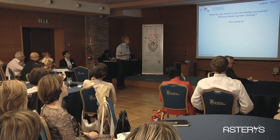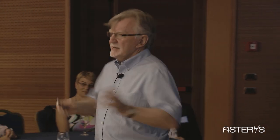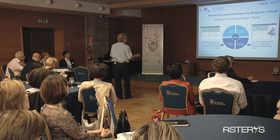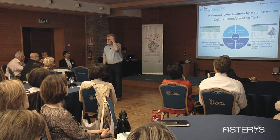How do you know if you're being successful driving whole system change? First, you need to measure the consciousness of the leaders. Then measure the consciousness of the organization as perceived by employees — is there values alignment, mission alignment? And third, measure the consciousness of the organization as perceived by customers and society. We're talking about a 360-degree look at the organization — internal and external — are the values in alignment with society, employees, customers, shareholders, and suppliers? When you get that alignment, you get high-performance systems, processes, and organization.